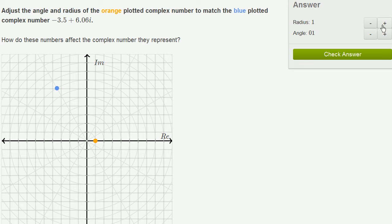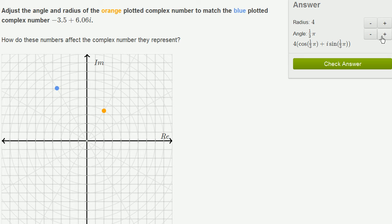So let's change that. If we increase the radius, the thing is going to go out a little bit. If we increase the angle, that's pi over 3. This is pi over 2.